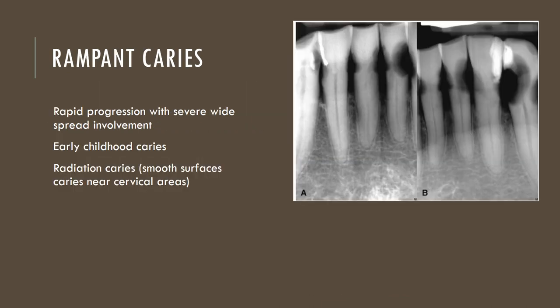The term rampant caries is used for rapidly progressing caries with severe widespread involvement. Early childhood caries as well as radiation caries are types of rampant caries. The image shown is an example of radiation caries in an adult — generally, radiation caries occurs on smooth surfaces near the cervical areas.